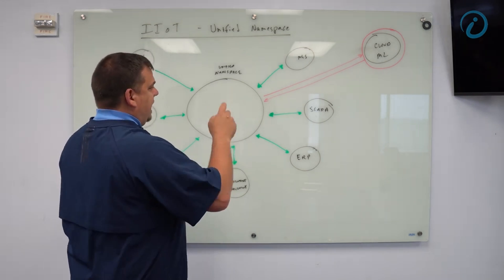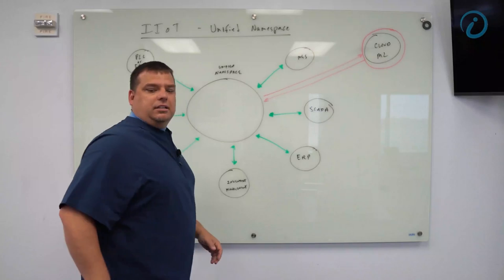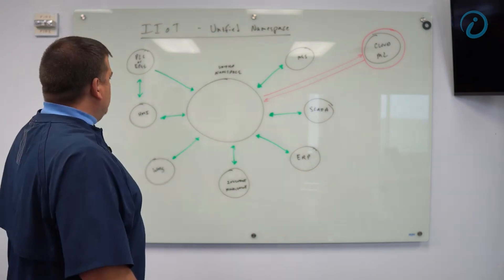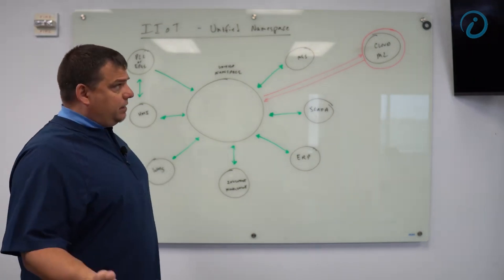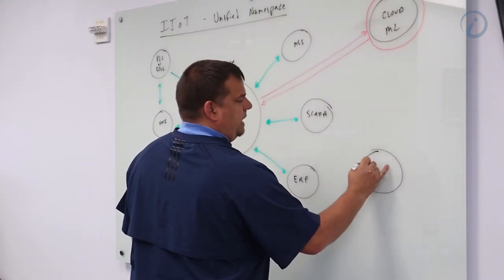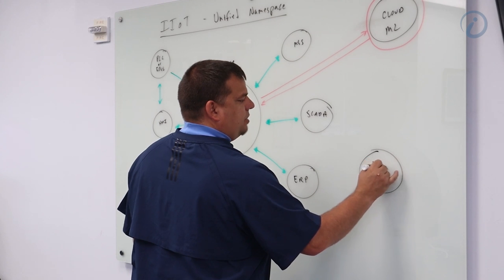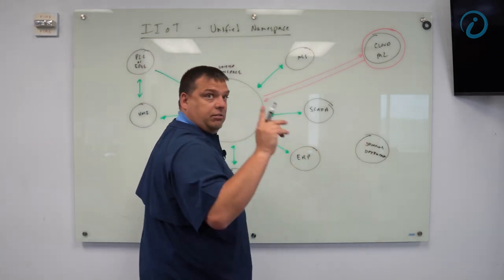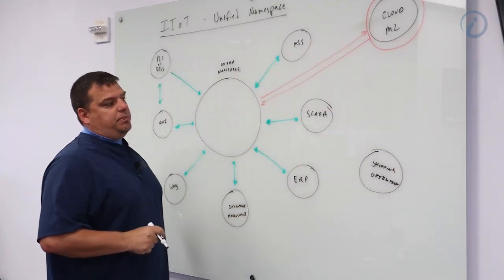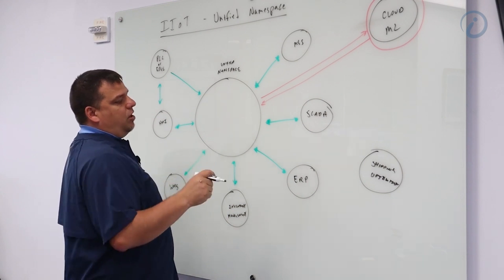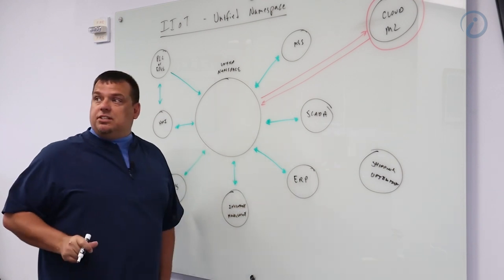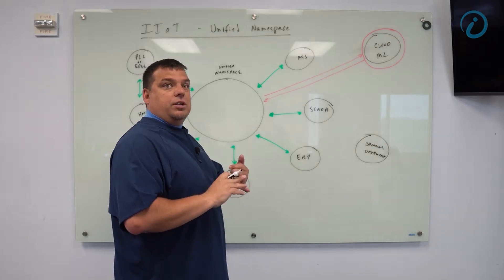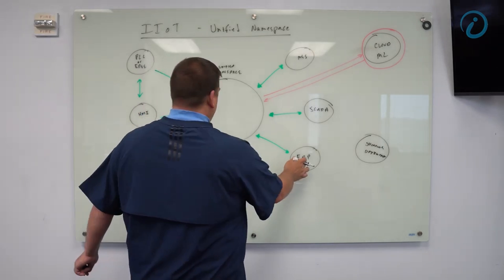So if I wanted to add a new piece of software later on down the road which was going to do, let's say shipping predictions, let's do that. This will be our shipping optimization software and it needs information. Here's the information that shipping optimization would need. It would need to know information from the ERP system, who the client is and where it's got to get shipped to. That's going to come from ERP.